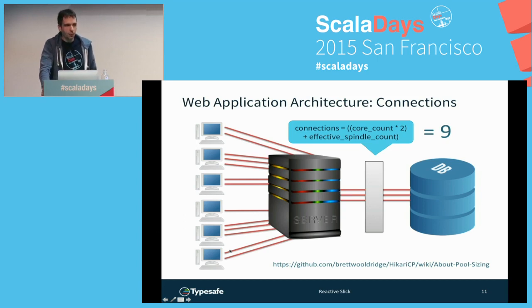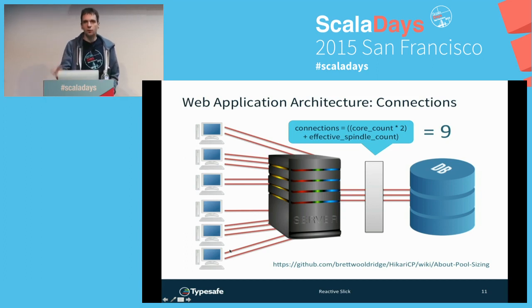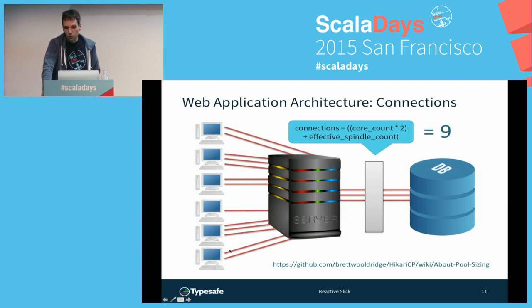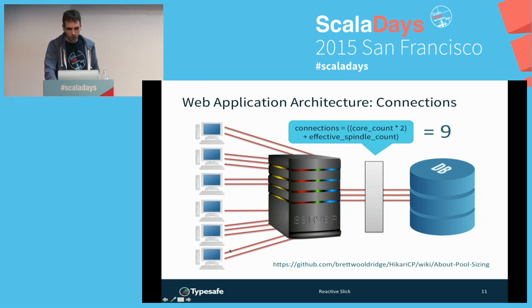If you think about the intuition behind it, it makes sense. You have eight CPU cores and can wait for one operation on disk — so how many things do you want the server to do at once? About nine. Everything else will just be waiting for CPU or disk. If it's waiting, it's more effective to have it wait on the application server rather than the database server.